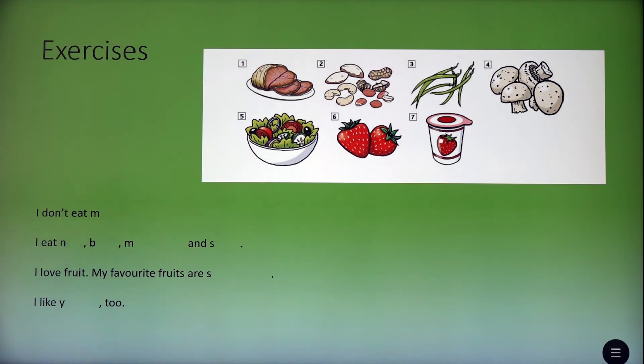Let's do some exercises about food. You can see the picture on the screen. Based on the picture, let's put the words in the sentences. Starting with the first one. I don't eat. The word starts with M. It's meat.